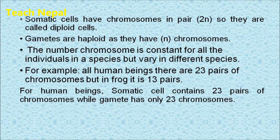There are two types of cells found in our body: somatic cells and reproductive cells. Somatic cells have chromosomes in pairs, so they are called diploid cells. Gametes do not have chromosomes in pairs, so they are known as haploid cells. In a single type of organism, the number of chromosomes is the same for all individuals of that species.